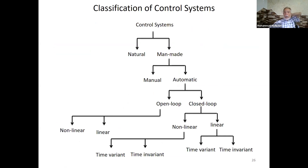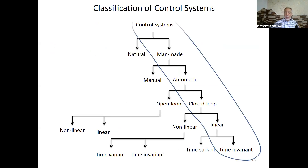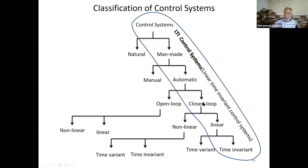The classification of control systems: at the top, natural or man-made. Man-made can be manual or automatic. Automatic can be open loop or closed loop. Closed loop can be linear or non-linear. Linear can be time-variant or time-invariant. Non-linear can also be time-variant or time-invariant. Open loop can also be linear or non-linear, but we don't discuss time-variance for open loop since it's fixed and doesn't run indefinitely.